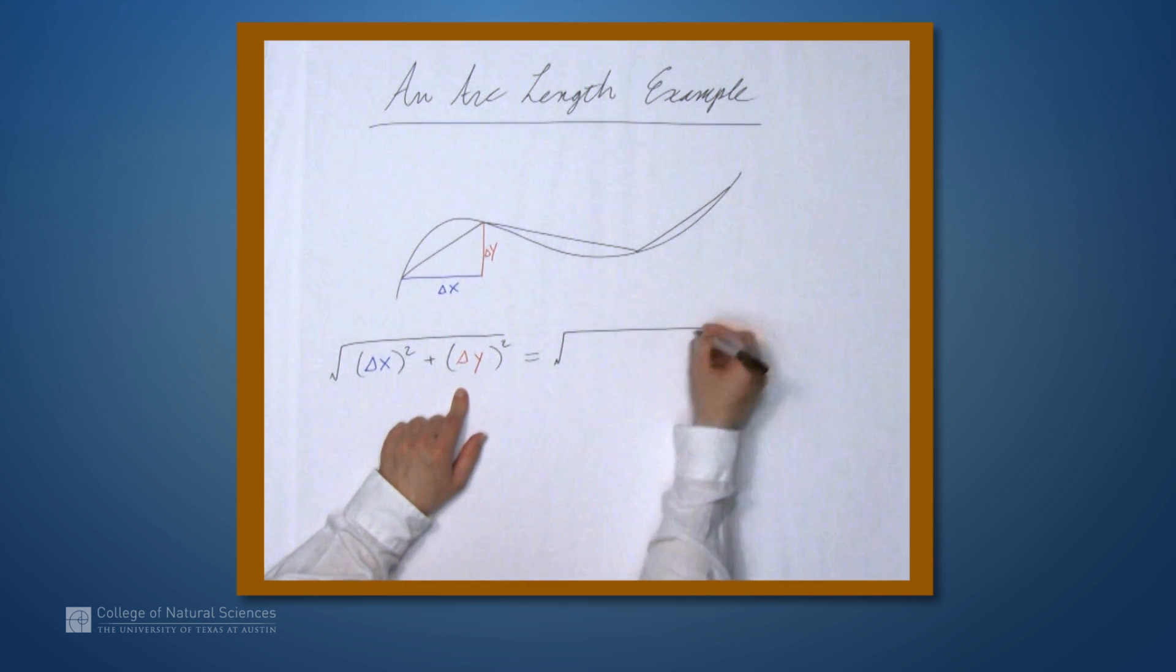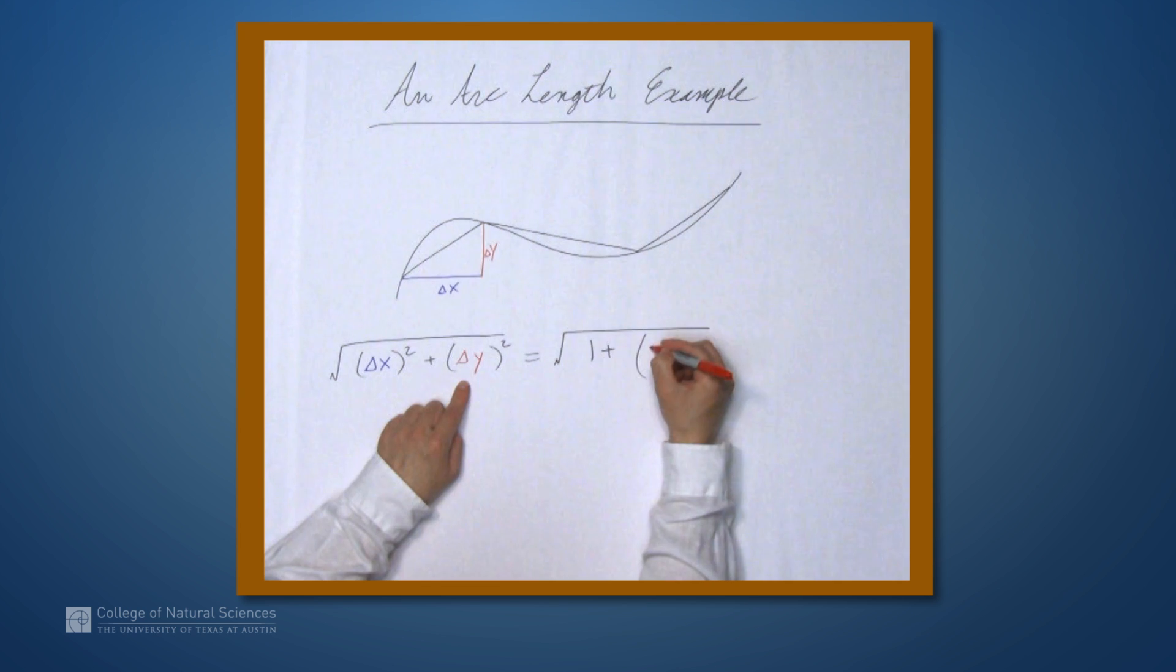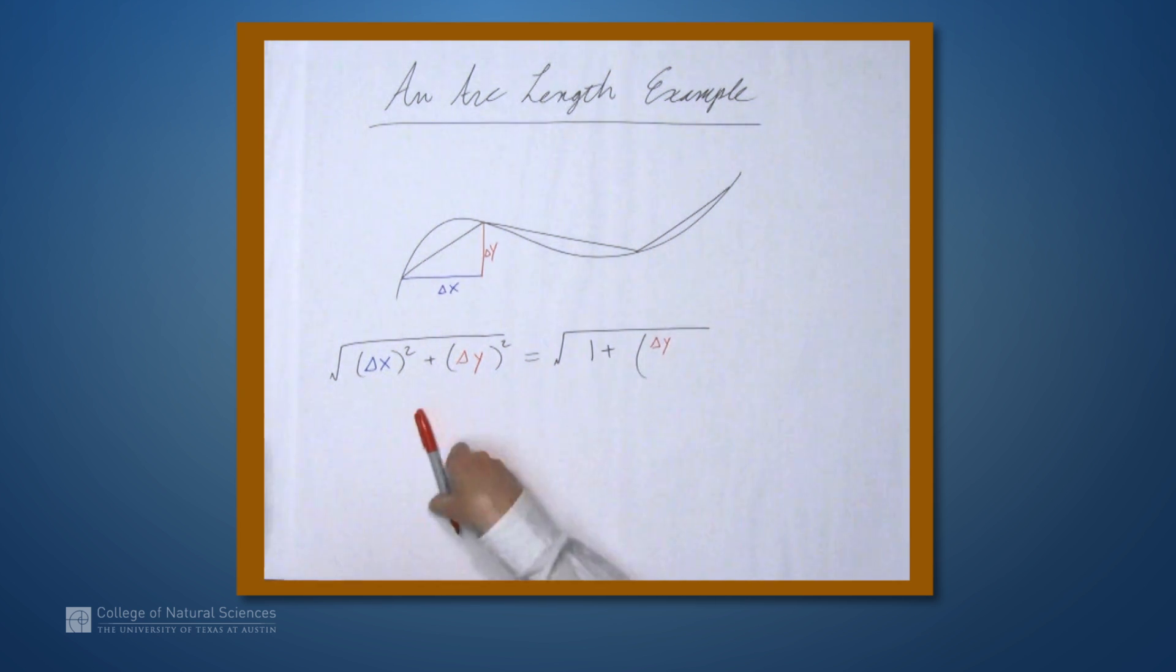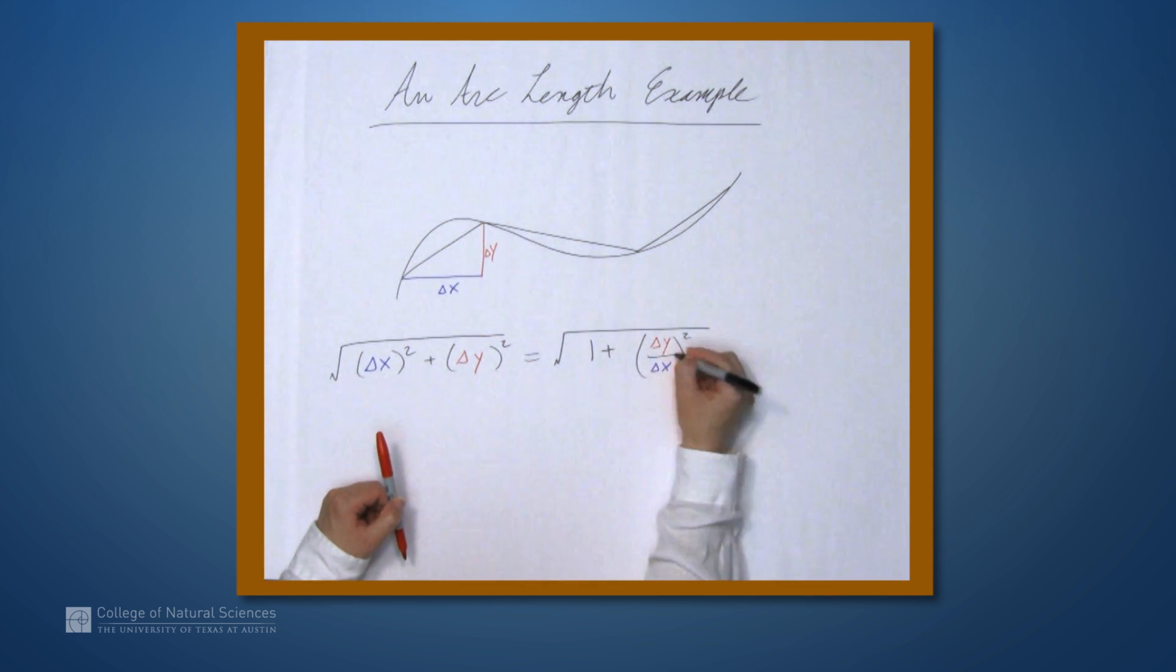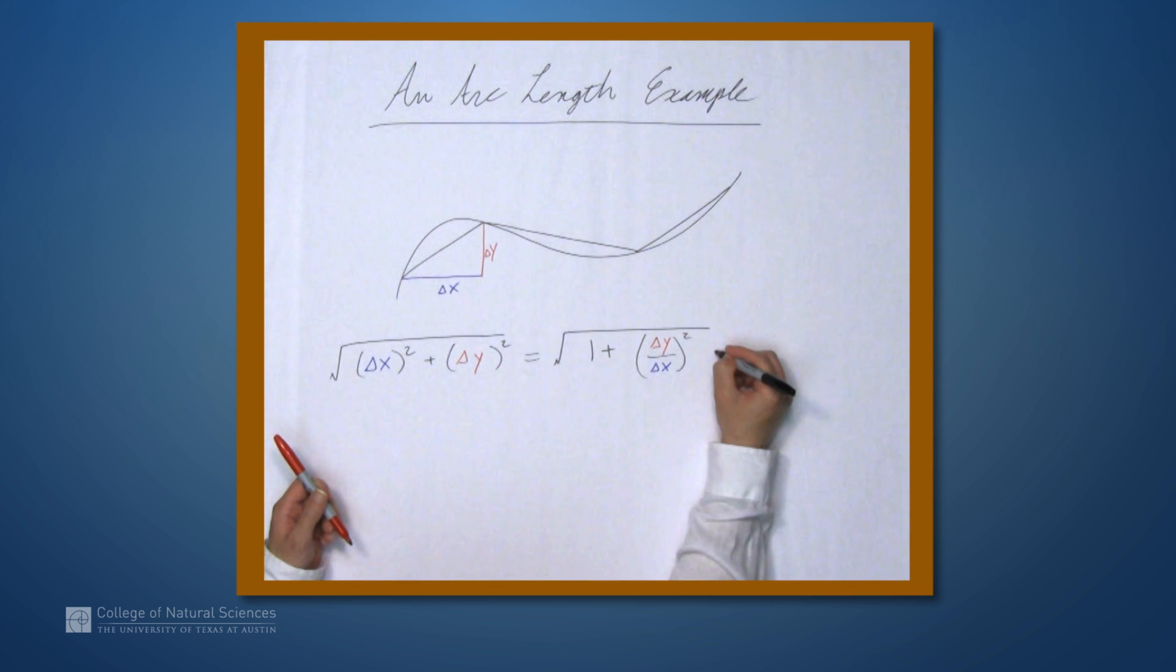So we'll end up with the square root of 1 plus, and now we have Δy over Δx. But now on the outside,